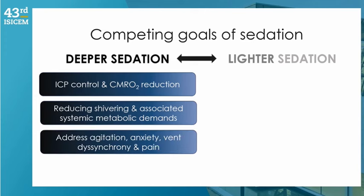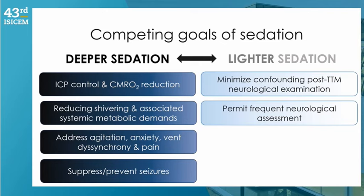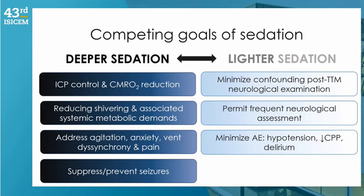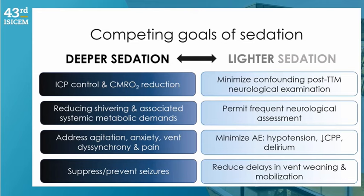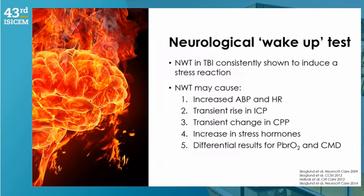The competing goals in the neuro ICU are: using deeper sedation to control ICP, metabolic demand, shivering, and prevent seizures; versus using lighter sedation to minimize confounding during neuroprognostication, allow frequent neurological wake-up tests, avoid hypotension and drops in perfusion pressure, and potentially reduce ICU length of stay. Sedation obscures the clinical exam, which should always be the first neurological monitor.